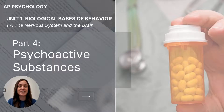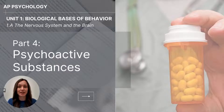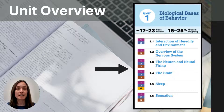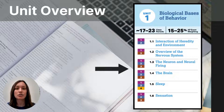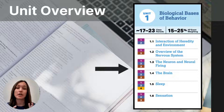Hi everyone, my name is Jolie McCreary and this video is part four of the unit one series on biological basis of behavior for AP psychology students. This particular video will cover psychoactive substances. It falls right after the neuron and neural firing because you will learn how psychoactive substances act on the nervous system to influence the way our neurons communicate.